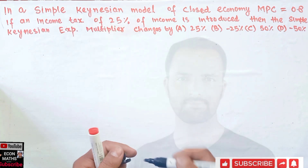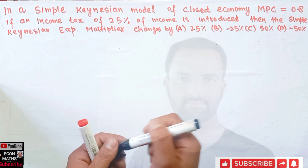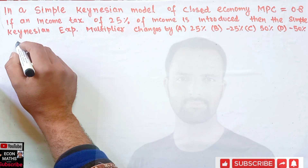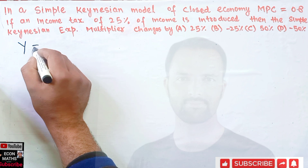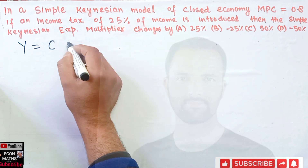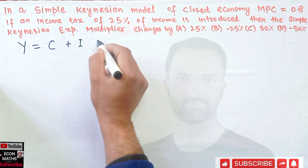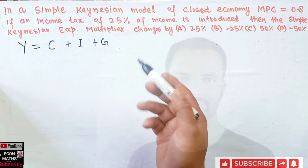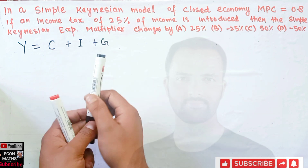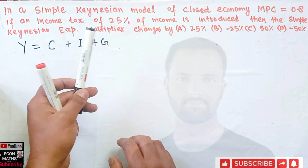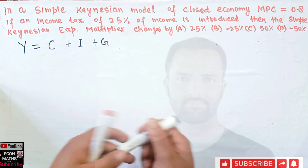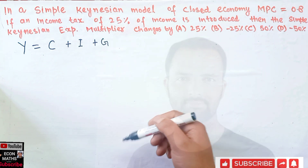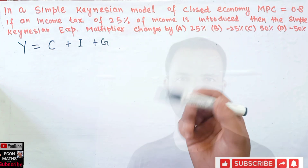Now we are being given the simple Keynesian model with closed economy. So what will be our GDP equation or GDP identity here? That is simply given by: total income or GDP is equal to consumption expenditure plus investment expenditure plus government expenditure. And since it is a closed economy, we don't have the import or export sector here. Now we will try to find the Keynesian expenditure multiplier without introducing the income tax first, and then we will solve it for the income tax.